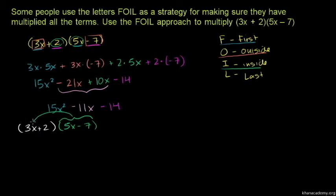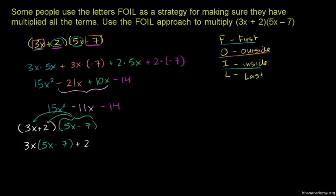If you multiply 3x, you will multiply 2 as well. You multiply the term by 5x minus 7. You multiply each term by 5x minus 7 to distribute across the polynomial.